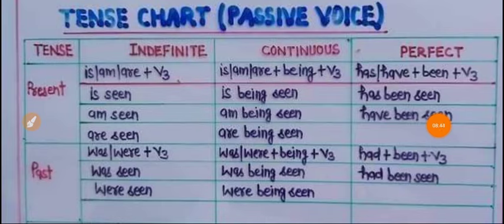Tense chart for passive voice — Present tenses: Present indefinite/simple میں is/am/are کے ساتھ past participle (third form) آئے گی۔ Present continuous میں is/am/are کے ساتھ being کا اضافہ ہوگا۔ Present perfect میں has/have کے ساتھ been کا اضافہ ہوگا — has been / have been plus past participle۔